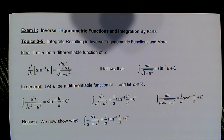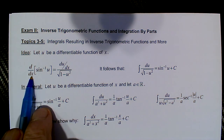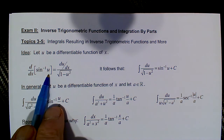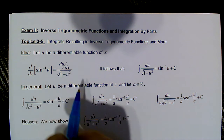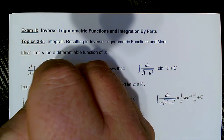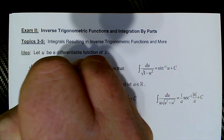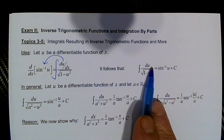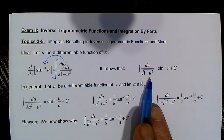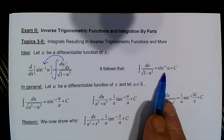First off, we want to think of the concept of integration as simply anti-differentiation. If we consider the derivative formula for the inverse sine of u, it's du/dx over the square root of 1 minus u squared. So if we want to reverse that process — basically just think of integrating — we get the integration formula: the integral of du over the square root of 1 minus u squared brings us back to the inverse sine of u.